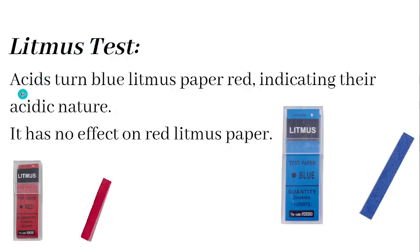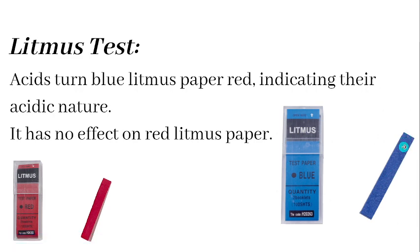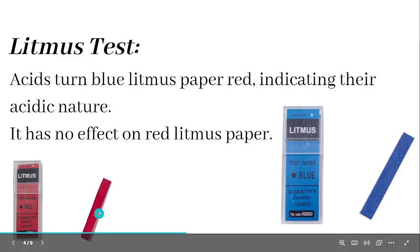Litmus test: Acid turns blue litmus paper red, indicating their acidic nature. It has no effect on red litmus paper. Over here you can see blue litmus paper — it is a strip of paper. If you dip one end of this into a substance and it turns red, then we can know that that substance is an acid. If we put red litmus paper in it, it will have no effect.